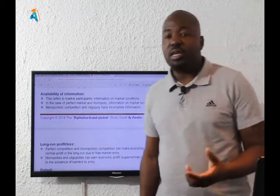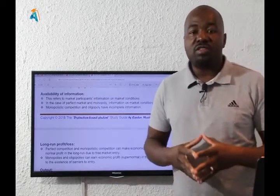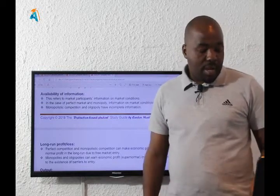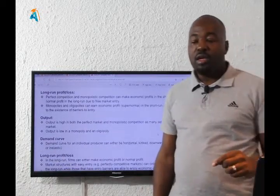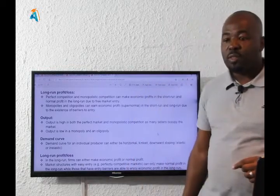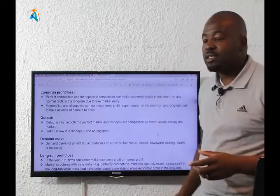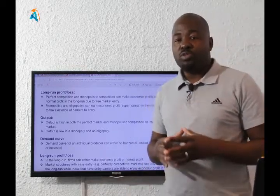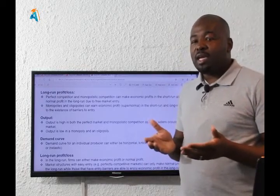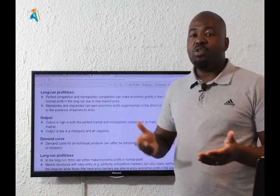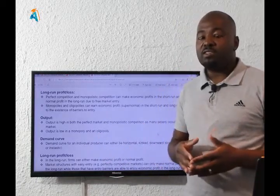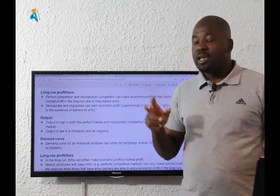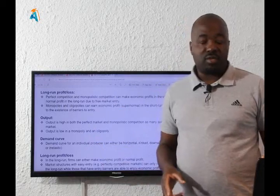The next one is availability of information. In certain market structures, information is complete; in others, it is incomplete. Then there is long-run profit or loss. In the long run, a business could make economic profit, or it might not. In some market structures a business can only make normal profit in the long run, and there are only two market structures where businesses can make economic profit in the long run, and two where they cannot.